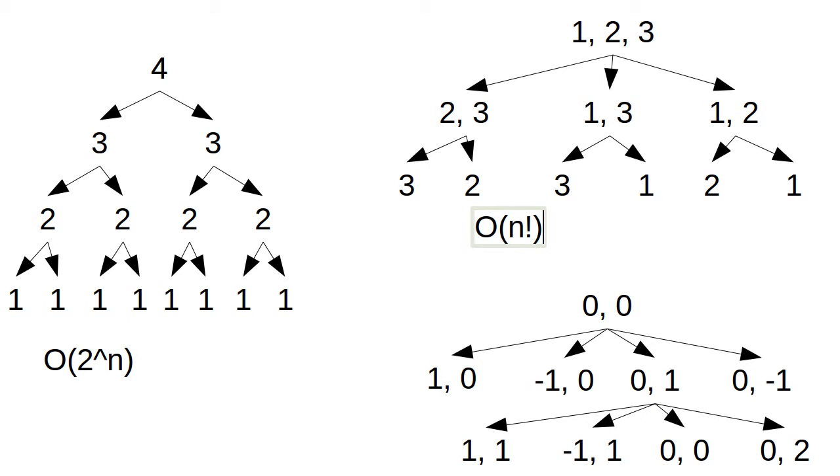You can't quite get to four to the n, which is what this would do if you never hit a base case. So if you always branched four times, we would get something that was four to the n. But you really do hit those.